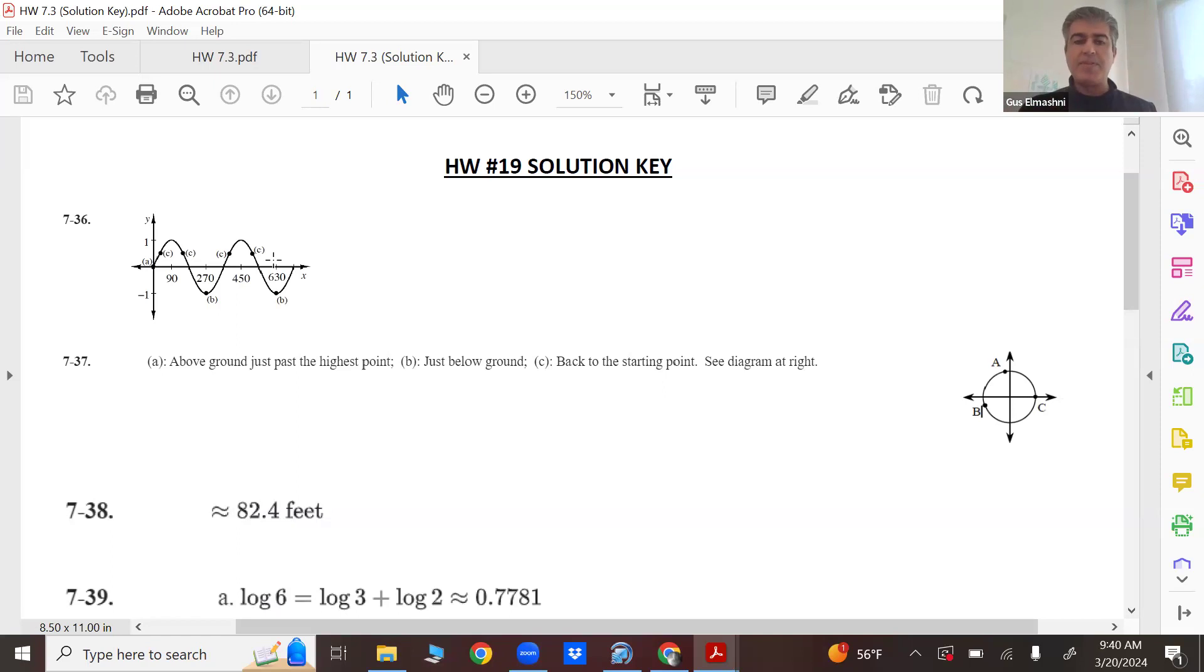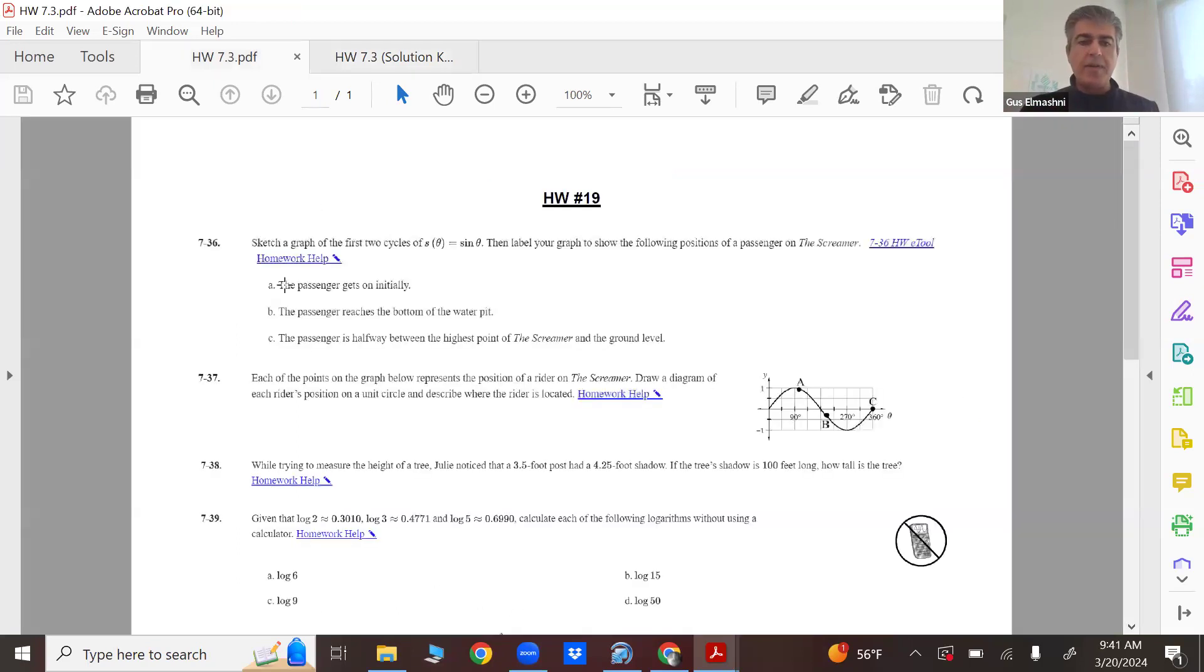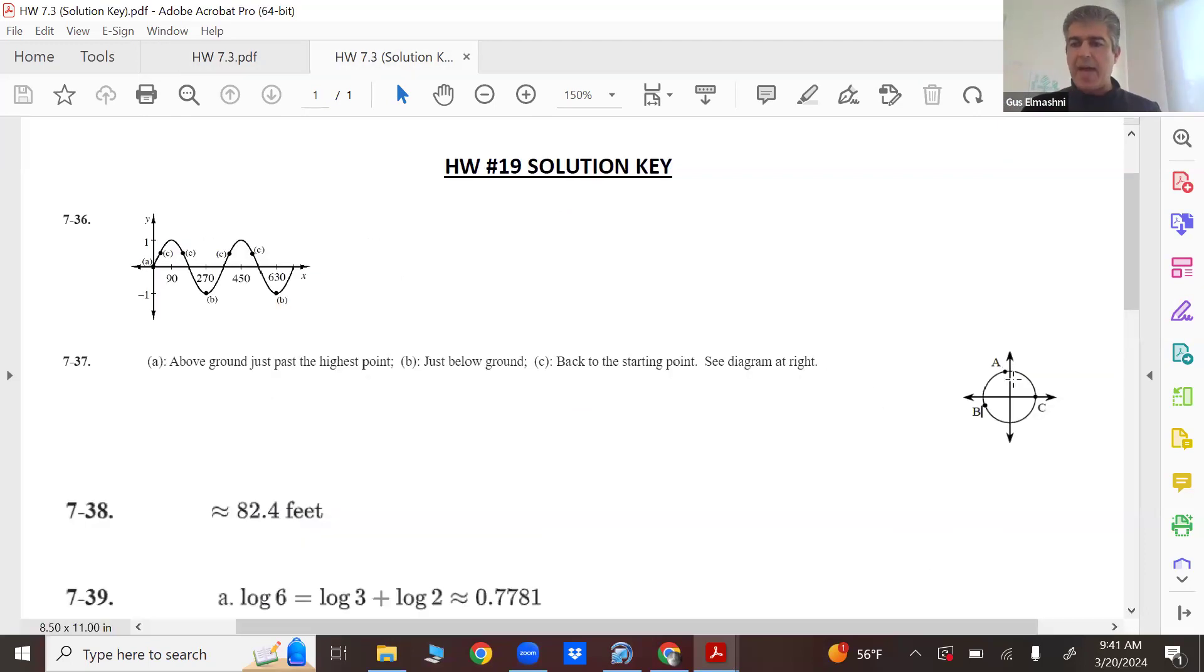And you reverse it for 737. For 737, they say, well, here are the points in the graph. Where would this be on the circle itself, the screamer ride? Well, A is a little past 90 degrees, so it's probably past the peak.